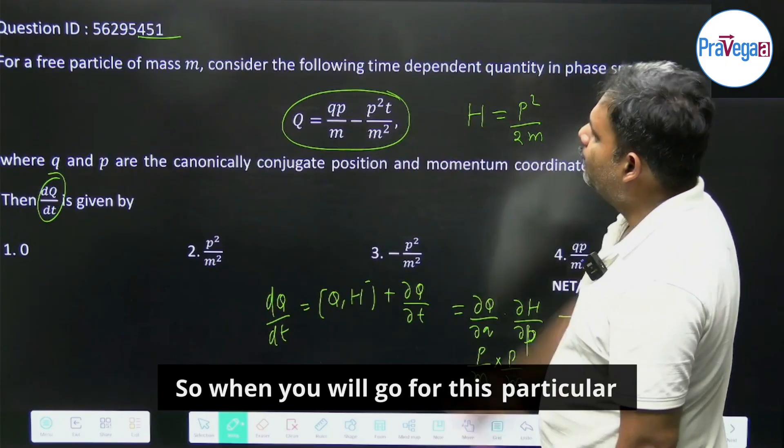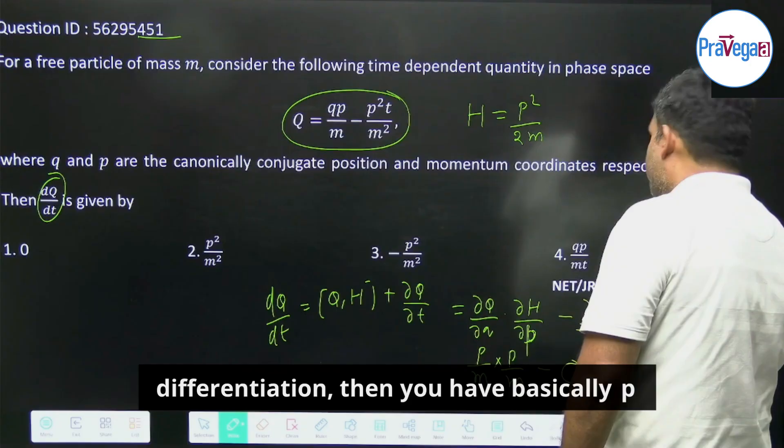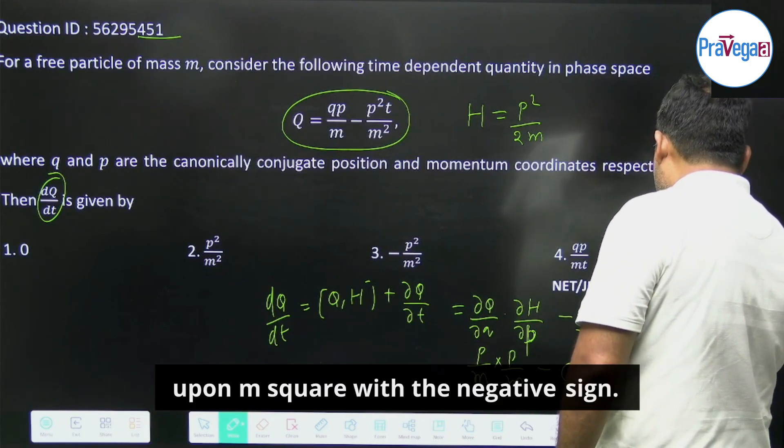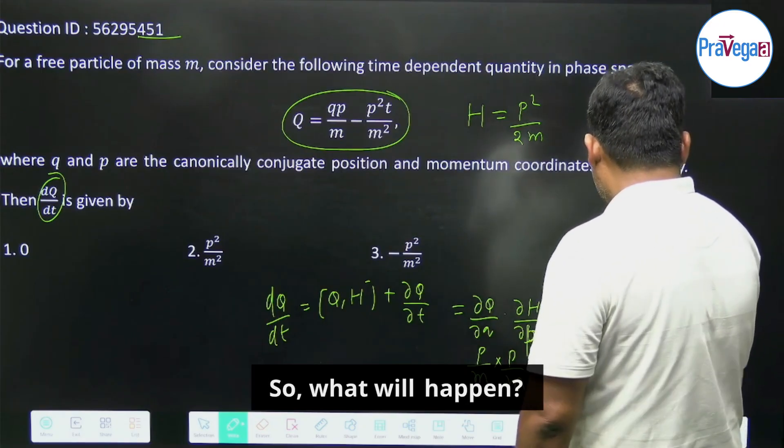So when you will go for this particular differentiation, then you have basically p squared upon m squared with the negative sign. So this is your p squared, m squared.